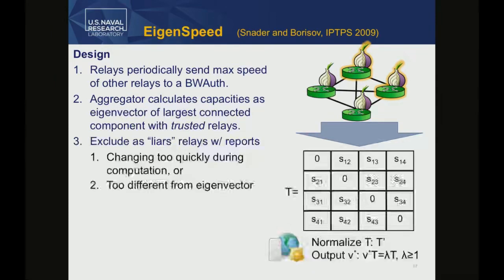The pairwise measurements form a matrix, and the aggregation takes the left eigenvector of this matrix. The intuition is that if I'm 10% of this eigenvector, then using a 10% weight in a linear combination of individual measurements would be self-consistent — it would give back this vector. It also means that if I end up with a high weight, my individual observations have more influence on the output. So if most of the network is honest, the adversary can't influence the result too much.